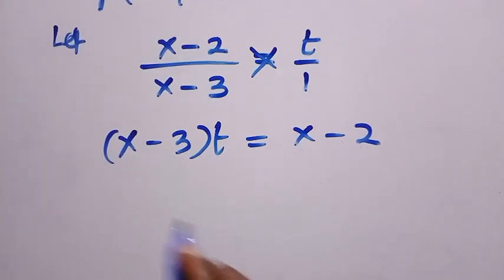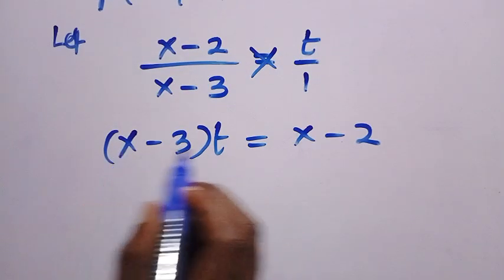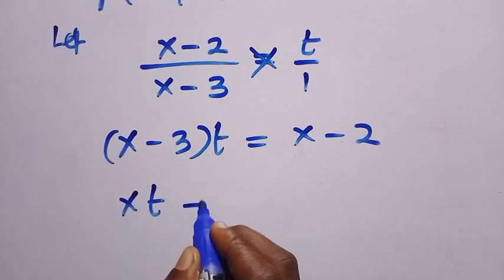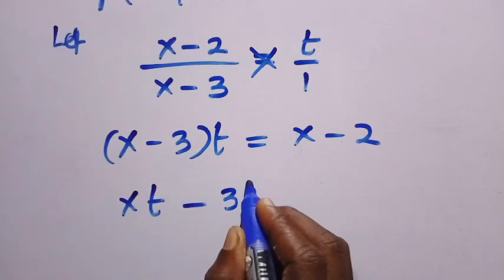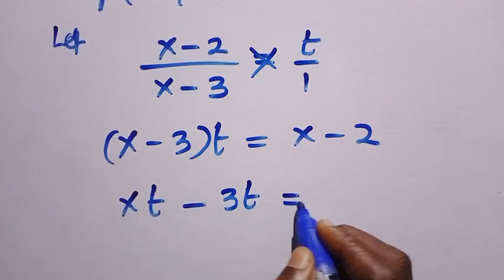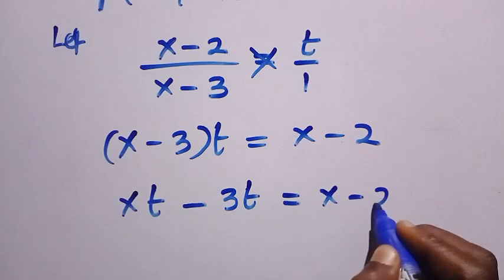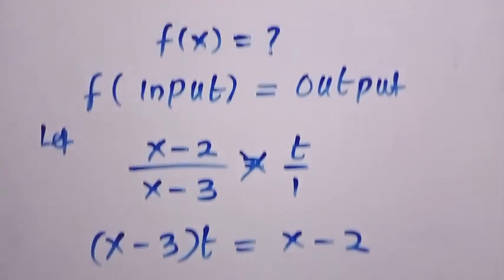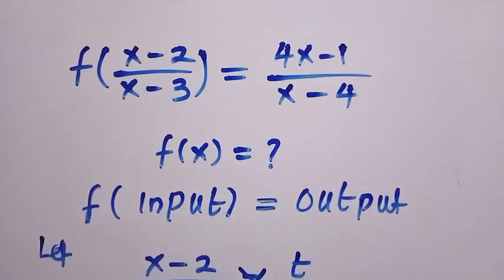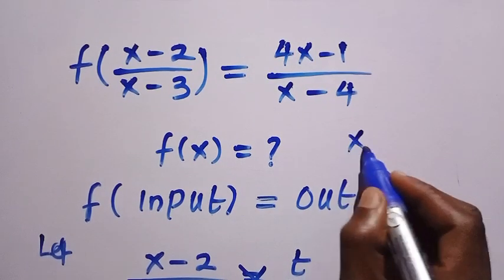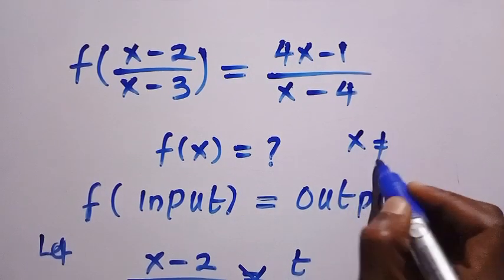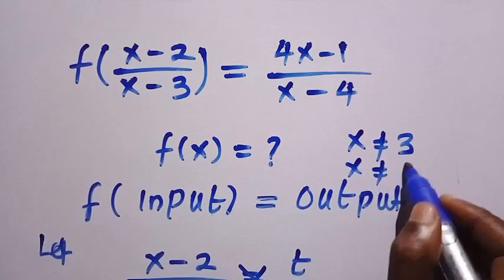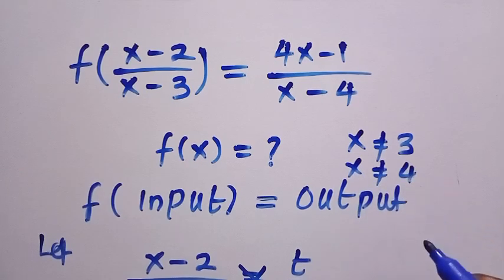We open the bracket: x times t, that is xt, minus 3 times t, that is 3t, equals x minus 2. Before we solve further, note that the value of x here is not equal to 3, and the value of x is not equal to 4 at this stage.